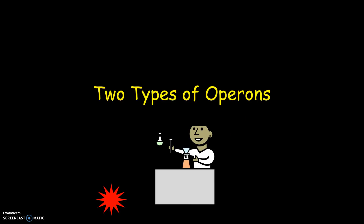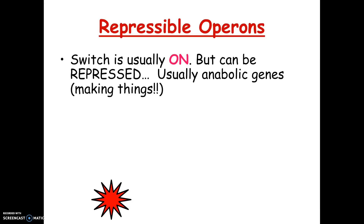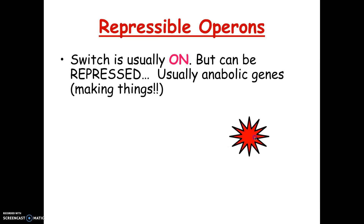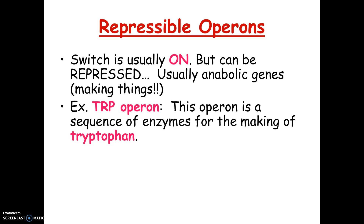There are two kinds of operons. The first is a repressible operon — it's normally in the on position but can be repressed or turned off as needed. The textbook example is the trp operon, which contains genes for making tryptophan, an amino acid. Bacteria need tryptophan all the time, so this operon is usually on, but bacteria need a way to turn it off — for example, if tryptophan is already present in the environment.